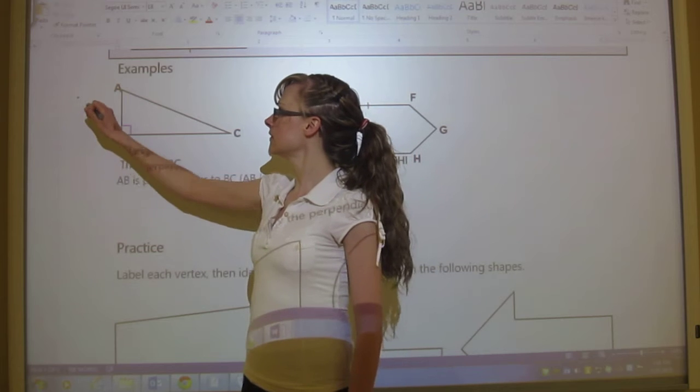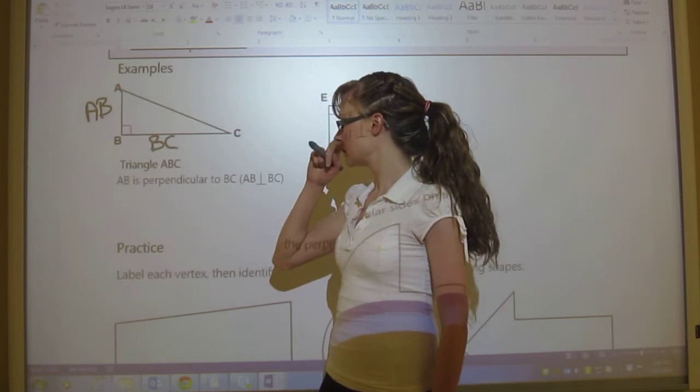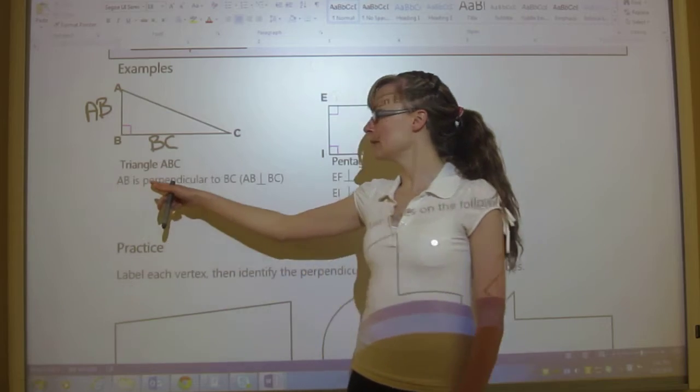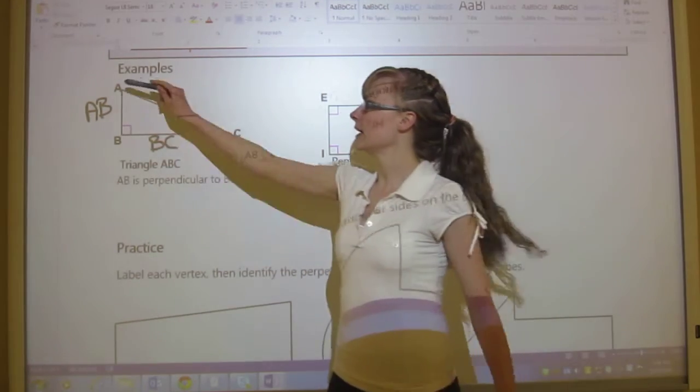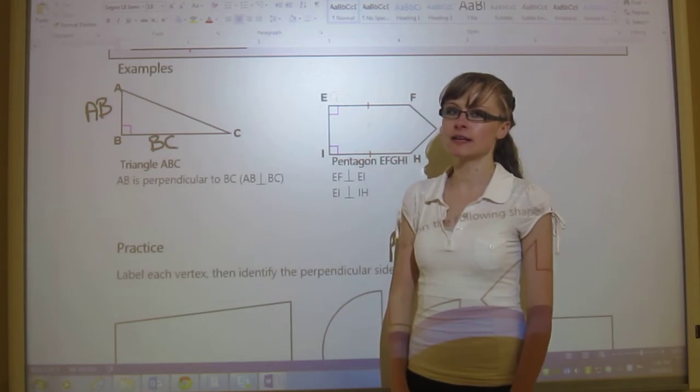Side AB is right here. Oh, I just picked a selective marker here. AB, and this is side BC. So AB is perpendicular to BC. AB perpendicular to BC. You can say that BC is perpendicular to AB as well. That doesn't really make a difference.